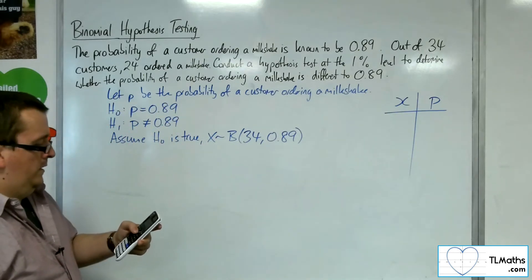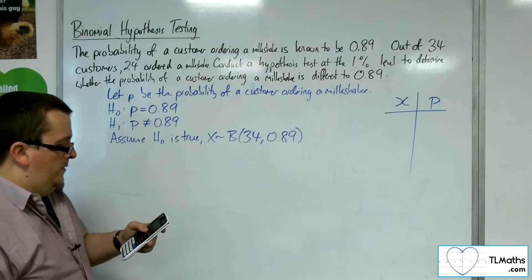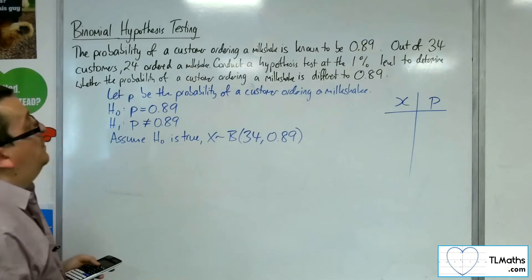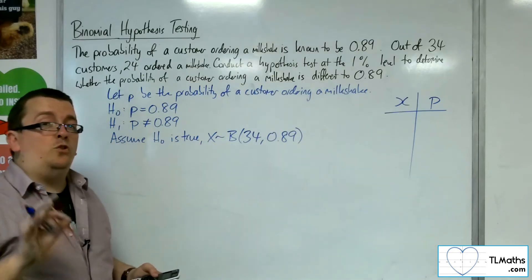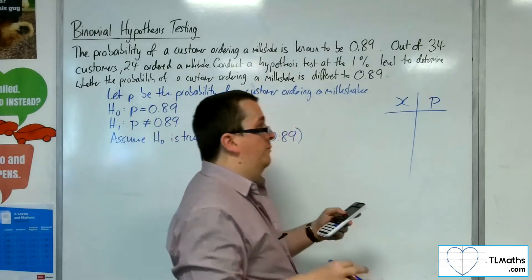We are looking for 0.0, well, it's a 1% level, we halved that, so it's actually 0.5%. So 0.005.